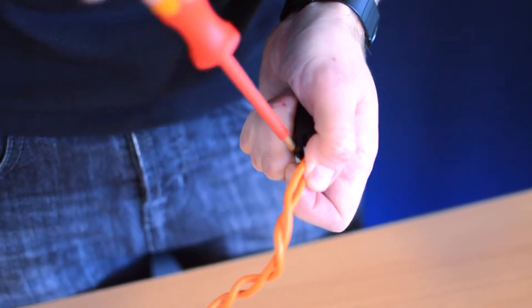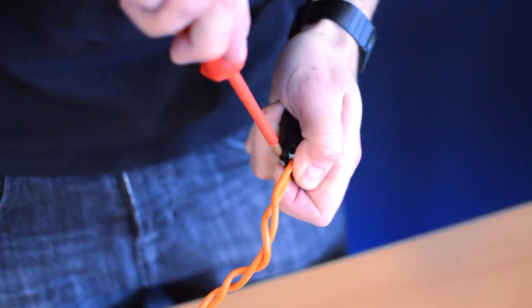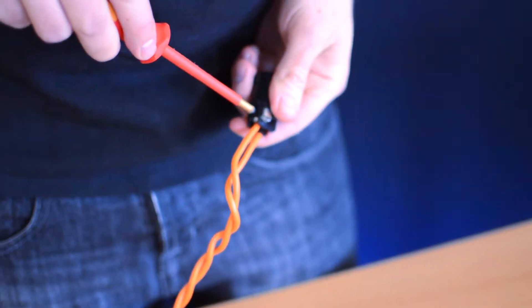If you've got a soldering iron on hand, it might be worth tinning the ends just to keep them nice and neat as you're fitting this. Make sure they're nice and tight so they're not going to come out.